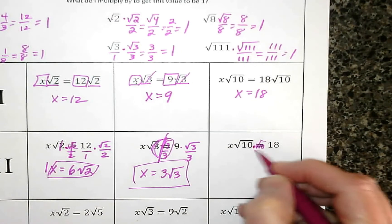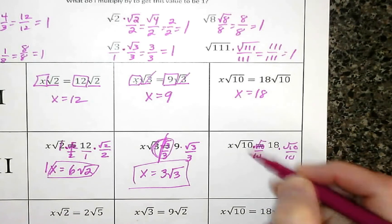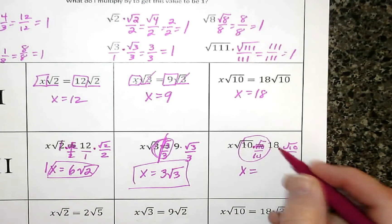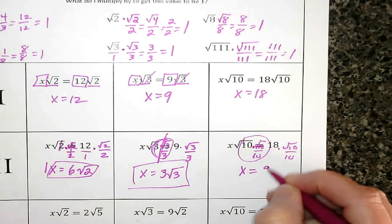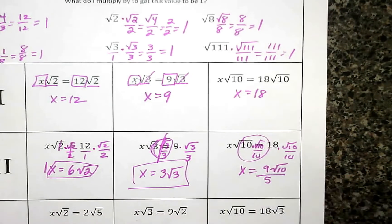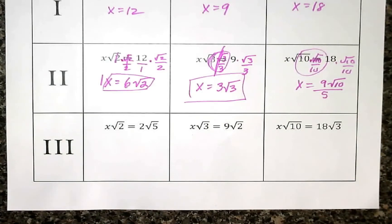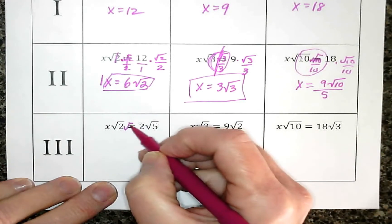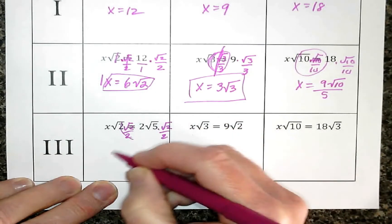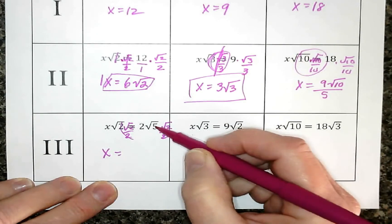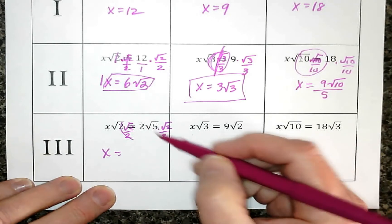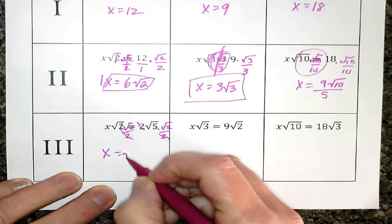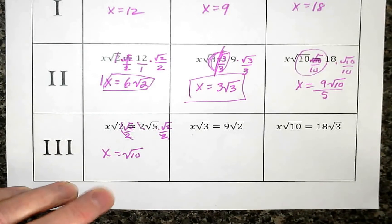The last row follows the same procedure but with a little more multiplication. To clear square root of 2, multiply by square root of 2 over 2 on both sides. The 2 on top and 2 on the bottom cancel, and square root times square root gives a square root, so x equals square root of 10. For the next one, multiply by square root of 3 over 3 — 9 and 3 cancel giving 3, and square root of 2 times square root of 3 is square root of 6.